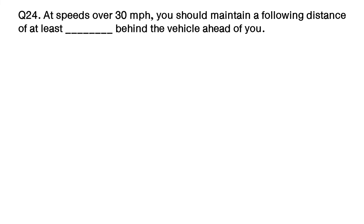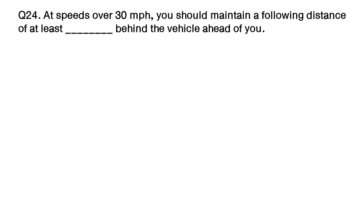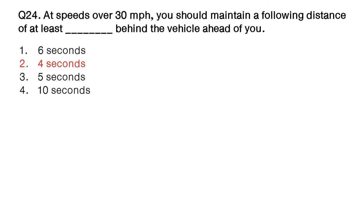Question: at speeds over 30 miles per hour, you should maintain a following distance of at least how many seconds behind the vehicle ahead of you? Option number 1: 6 seconds. Option number 2: 4 seconds. Option number 3: 5 seconds. Option number 4: 10 seconds. The answer is option number 2: 4 seconds.